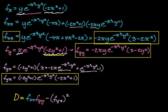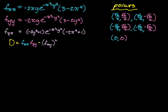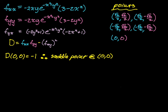At (0, 0): partial_xx has factors of x and y, so it's 0; partial_yy is also 0. Plugging into partial_yx we get 1·1·1 = 1, so D = 0·0 − 1² = −1. Since D < 0, we have a saddle point at (0, 0). We don't need to check concavity — it's a saddle point and we can move on.